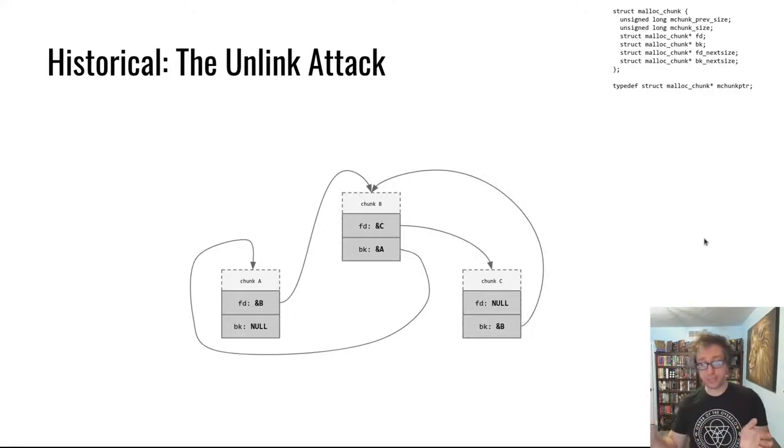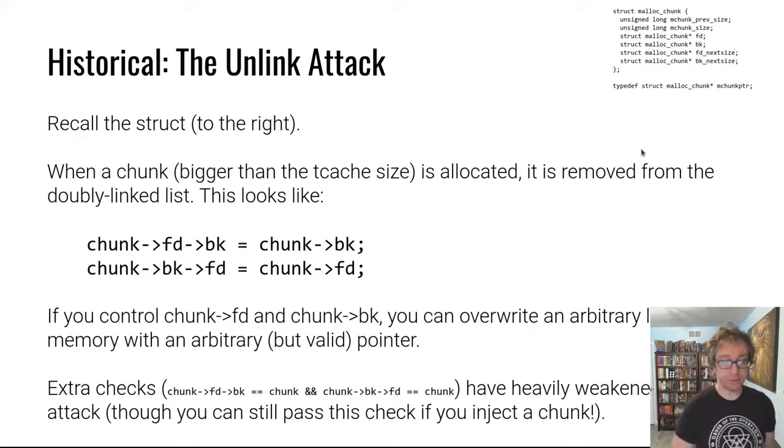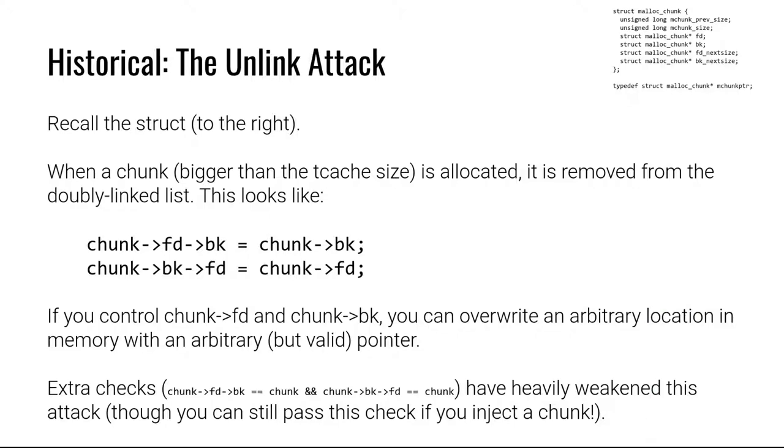And the doubly linked list goes chunk A, then chunk B, then chunk C. And we want to remove chunk B. How do we do that? Of course, we start with chunk B. We look at what is ahead and we say, okay, we take what's ahead, we take what's behind, and we just hook him up. Boom. And chunk B has been removed from the list using these two memory operations.